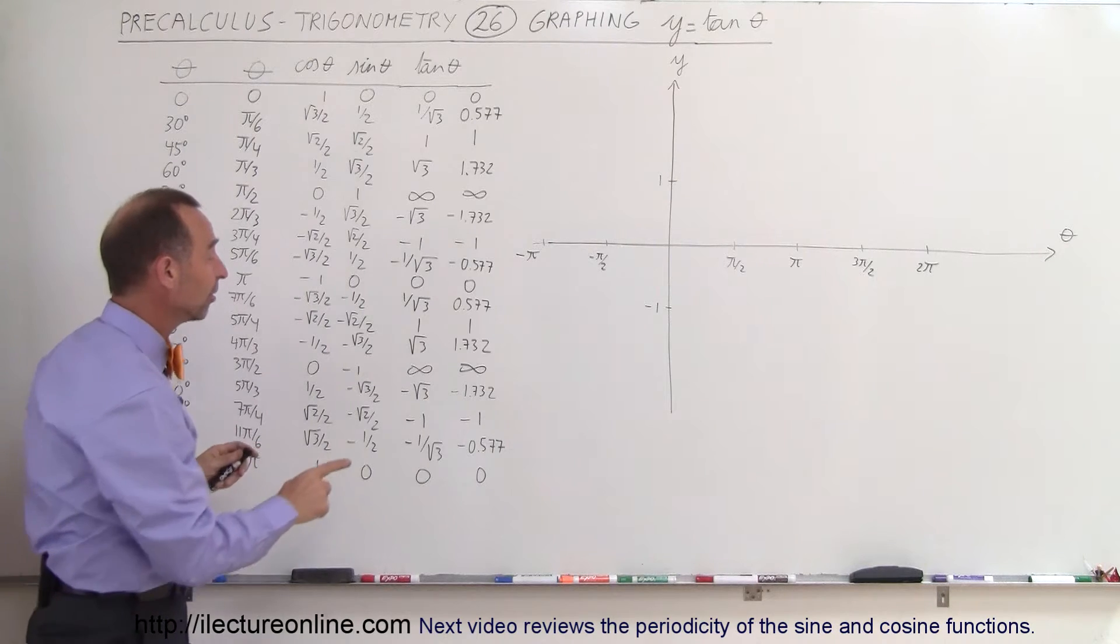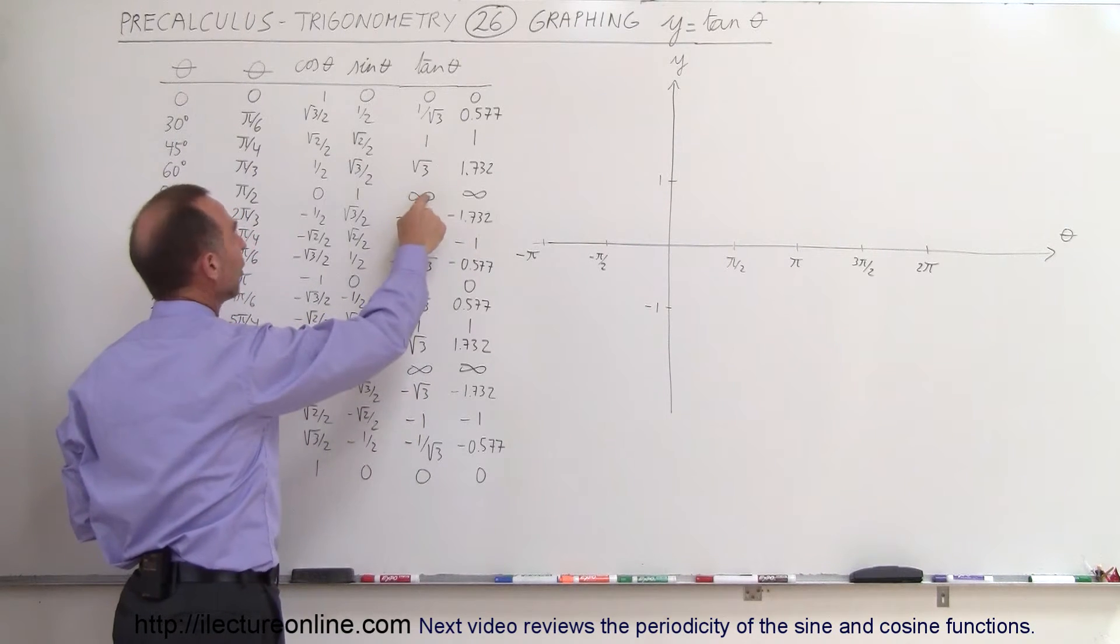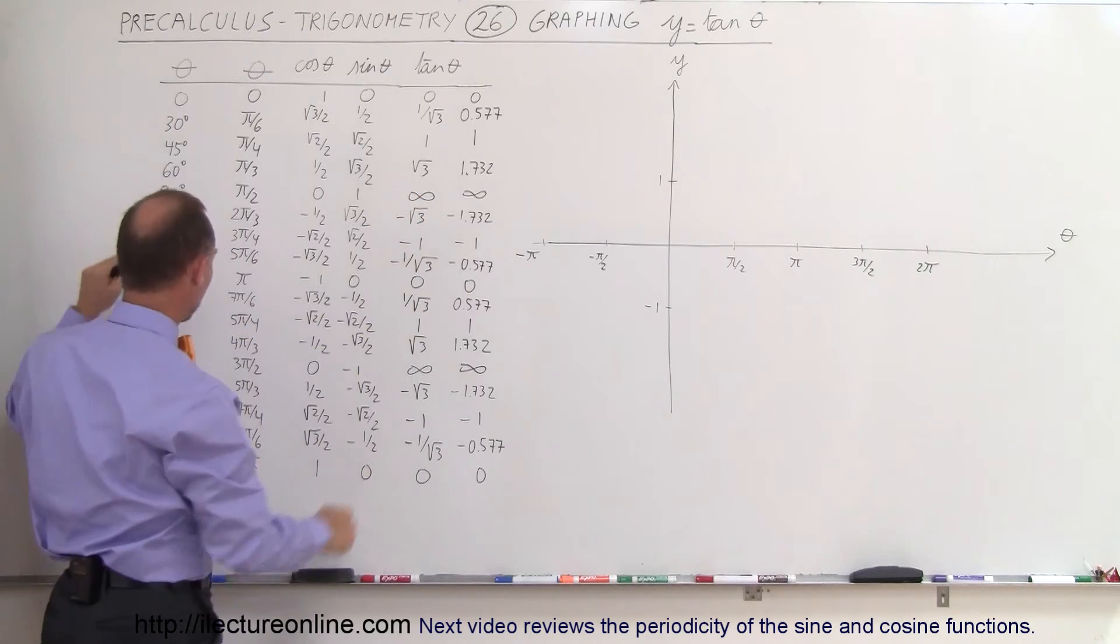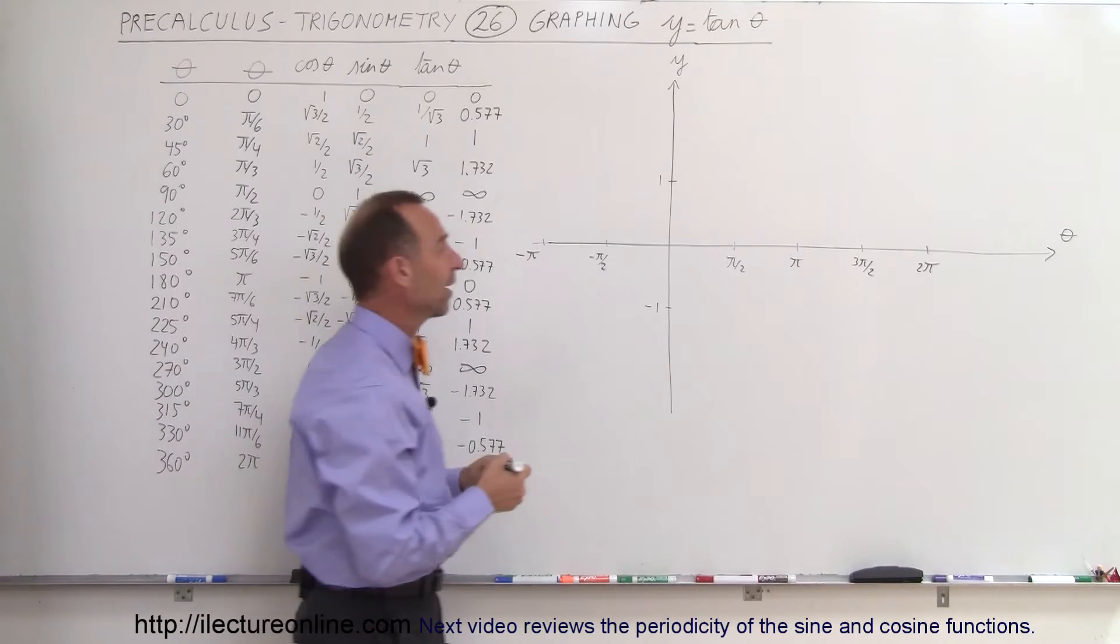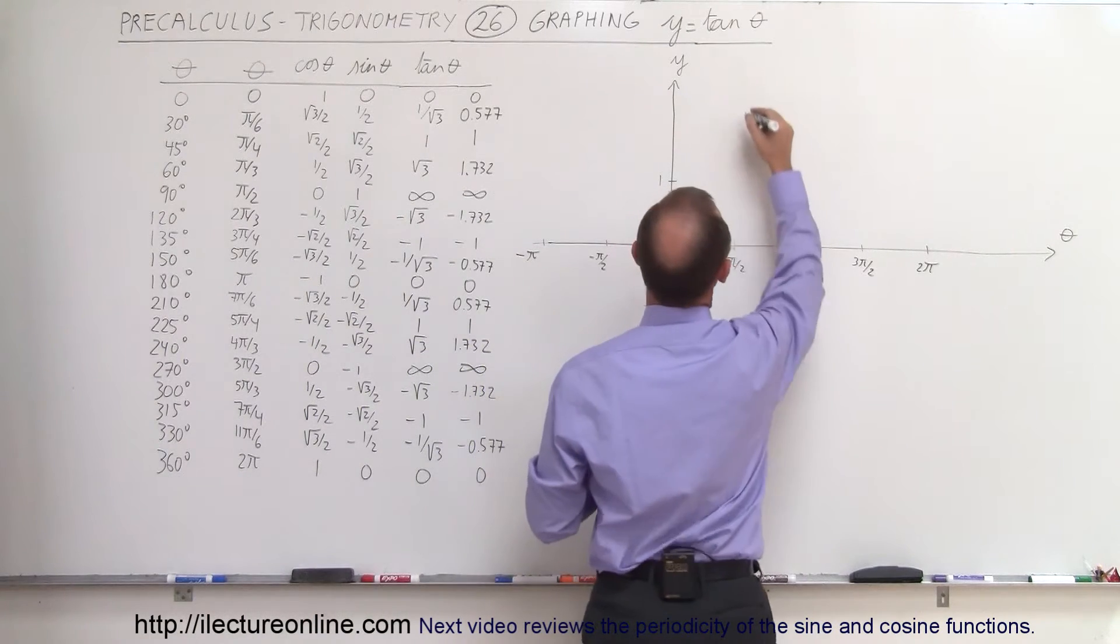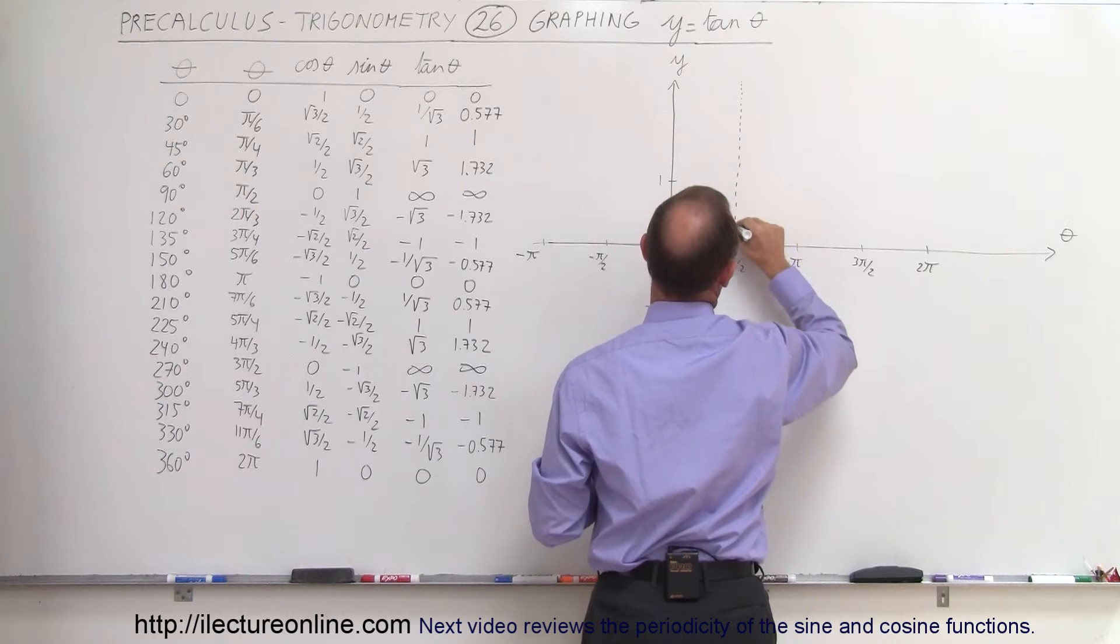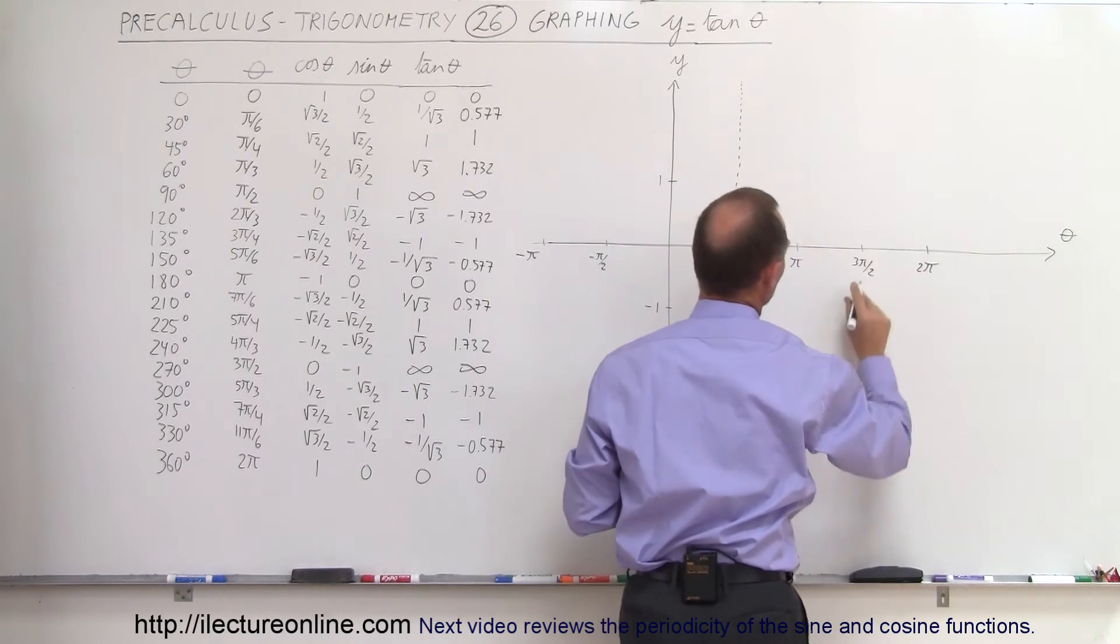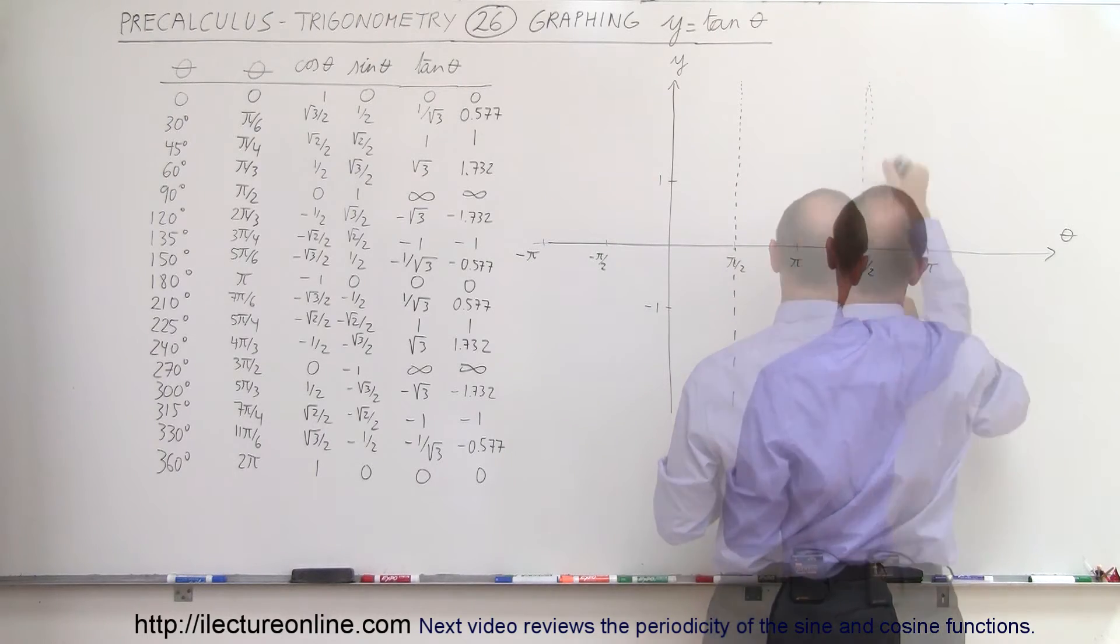Notice there are a couple of places where the result is infinite or undefined. So for 90 degrees and for 270 degrees the function is undefined. So at 90 degrees which is pi over 2 the function is undefined. So we draw an asymptote like this and at 270 degrees at 3 pi over 2 we have another asymptote right through here.